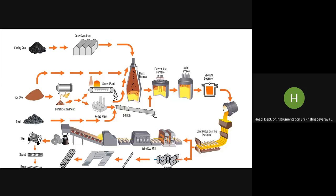Beneficiation is the process of cleaning iron ore by removing dirt and other impurities. After beneficiation and sintering — which is basically preheating — the iron ore reaches the blast furnace. The combination of coke, iron ore, limestone, and other fluxes is called the burden or charge. This material comes in from the top, and we will see the blast furnace diagram in the next slide.